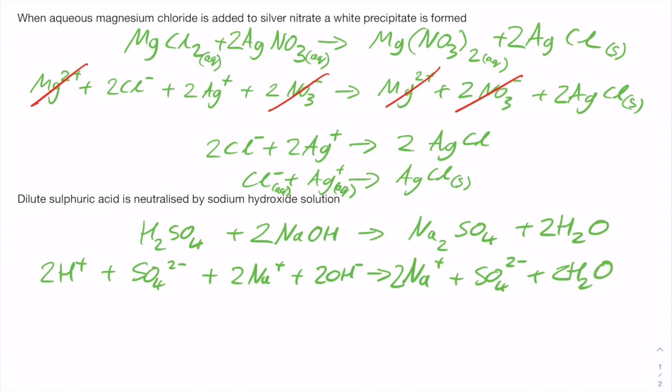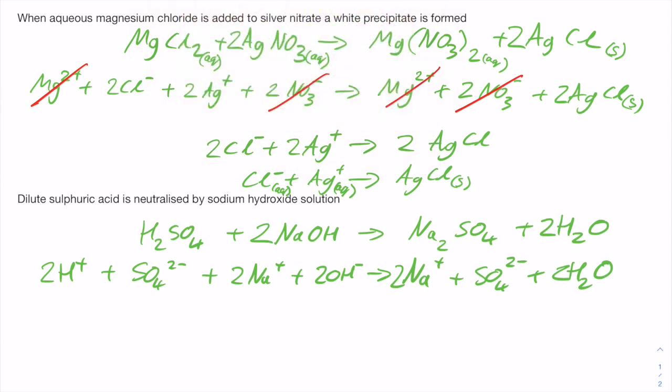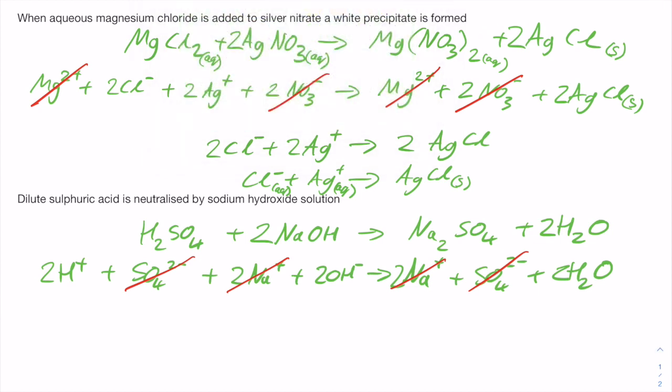So if we then go through and look at the ions we're going to cancel, we've got the sodium ions on this side and on this side so we'll get rid of those, and we've got sulfate ions on this side and this side, and then we're left with just the hydrogen and the hydroxide to make water.